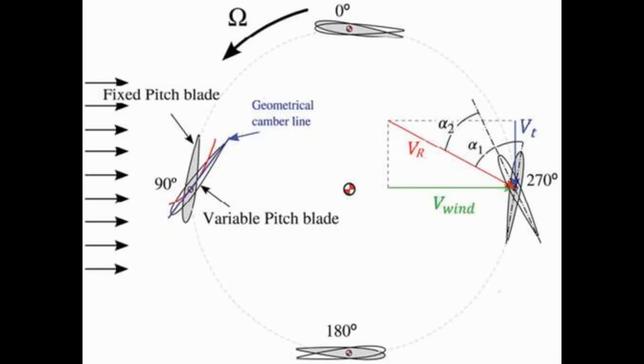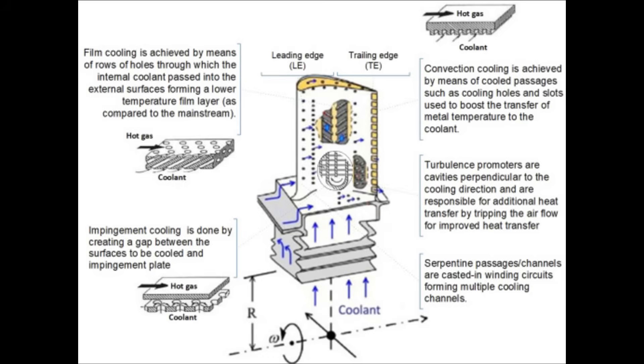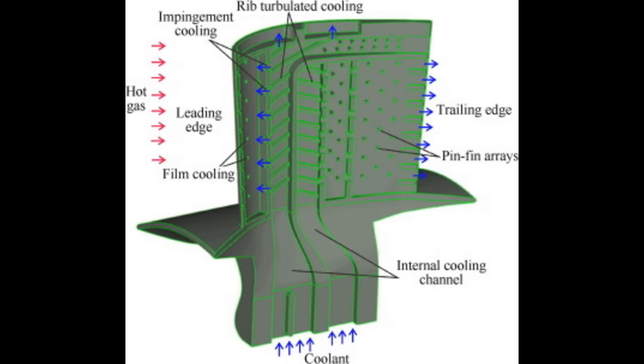Number two: aerodynamic efficiency. Compressor and turbine blades are carefully shaped to reduce drag and maximize airflow. Even small changes in blade angles can drastically affect performance.